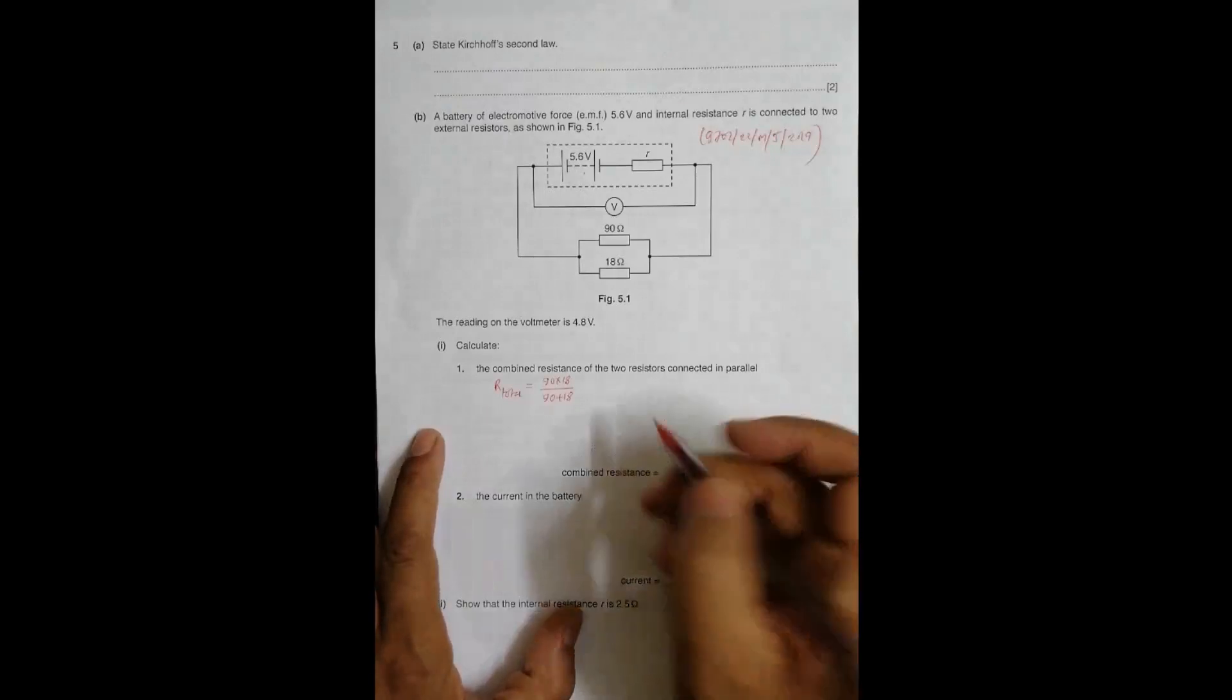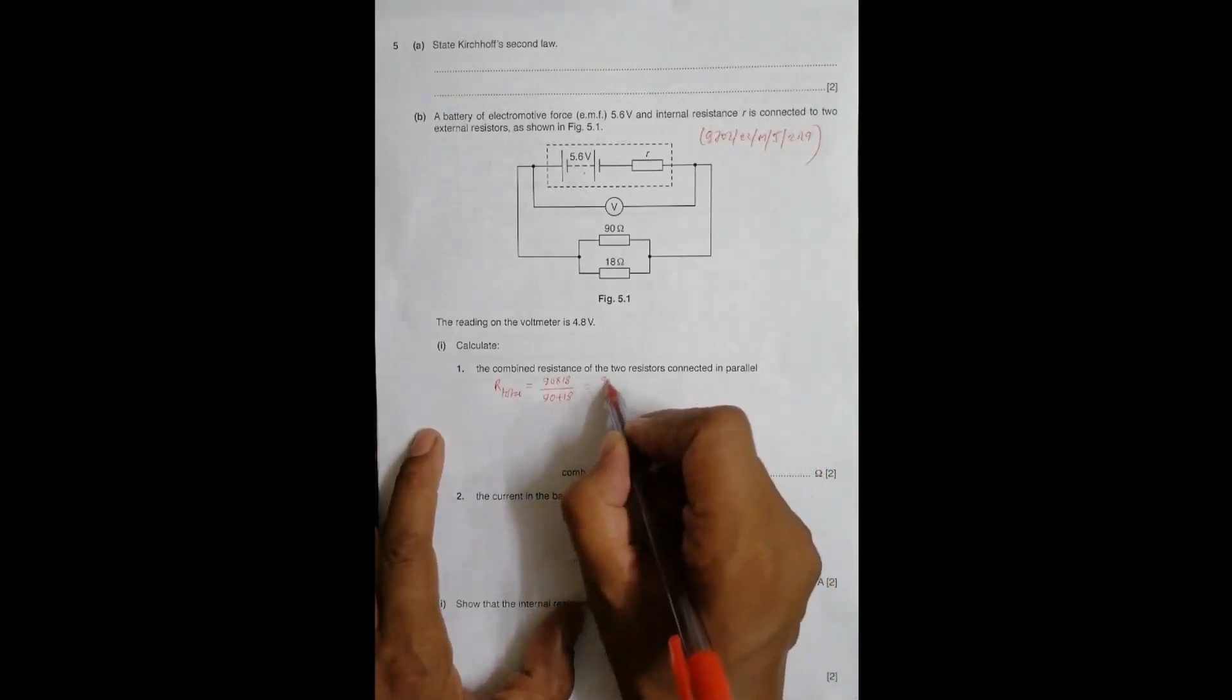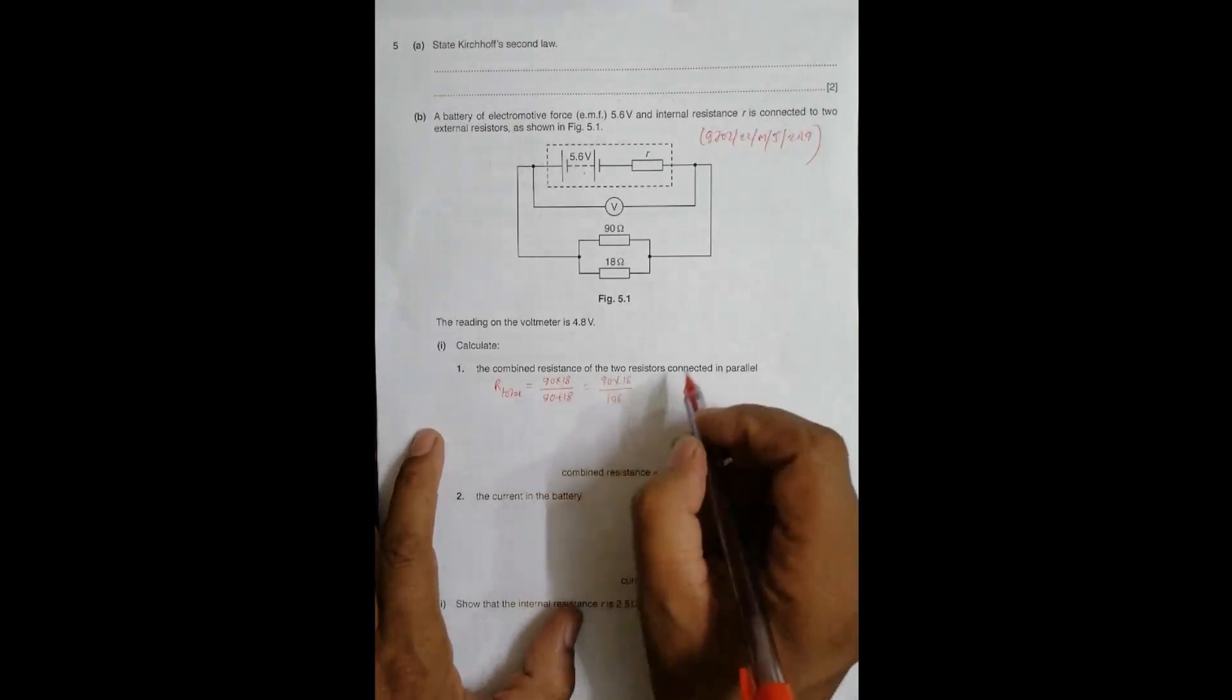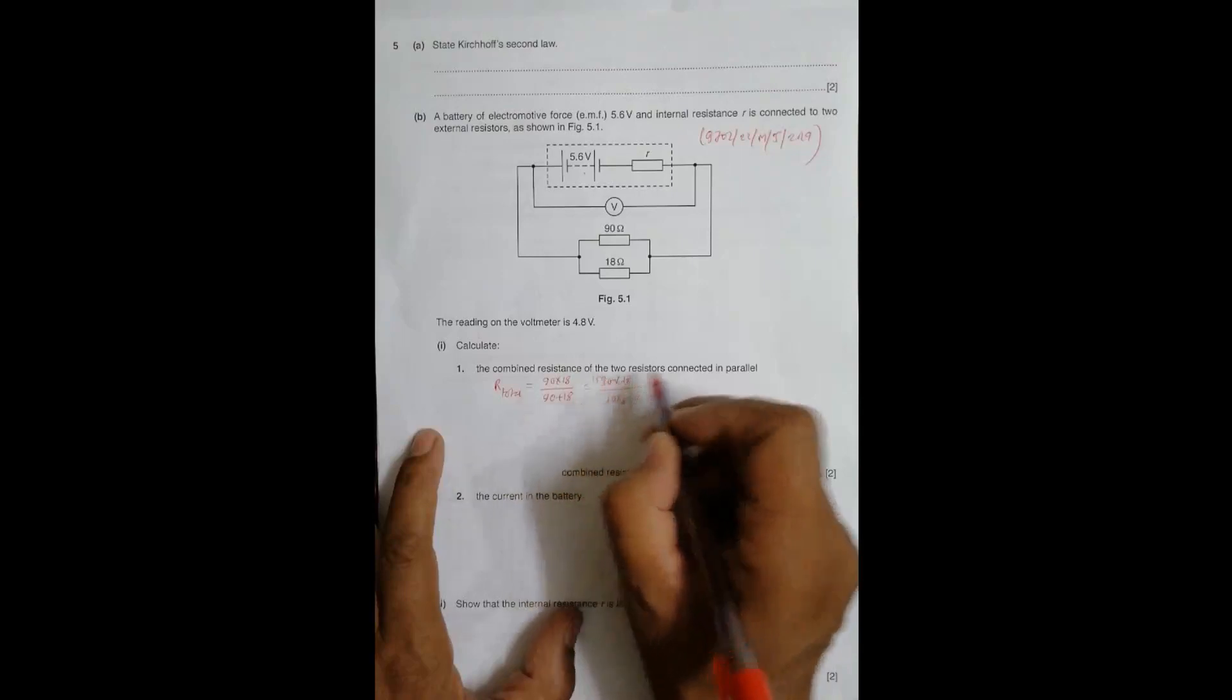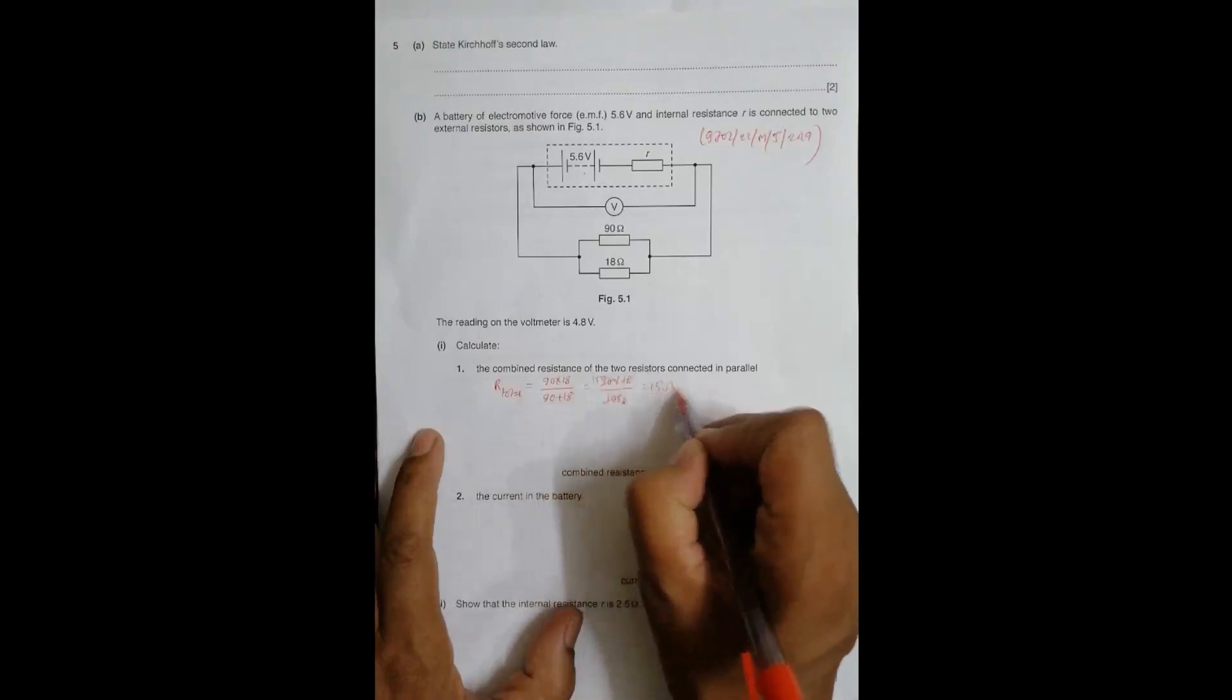So this equals 90 times 18, which is 108, and working through: 18, 6, and 6 gives us 15. So the combined resistance equals 15 ohms.